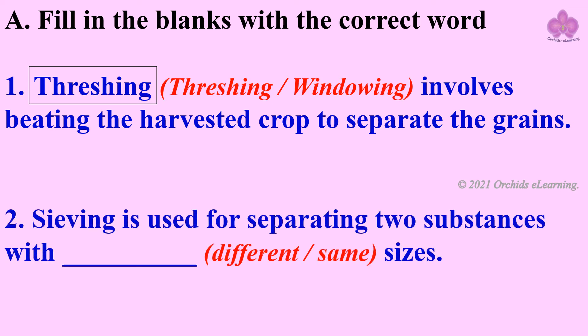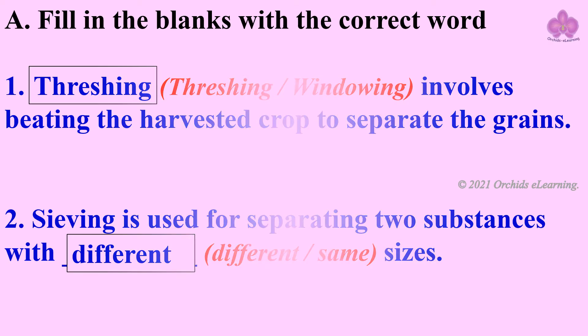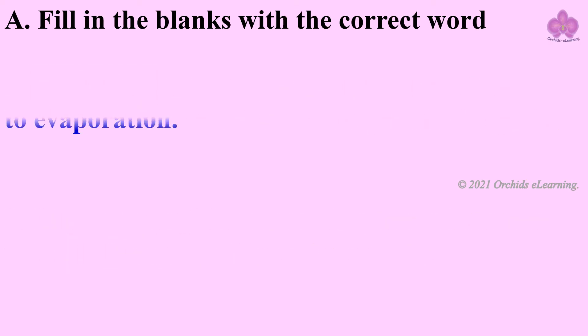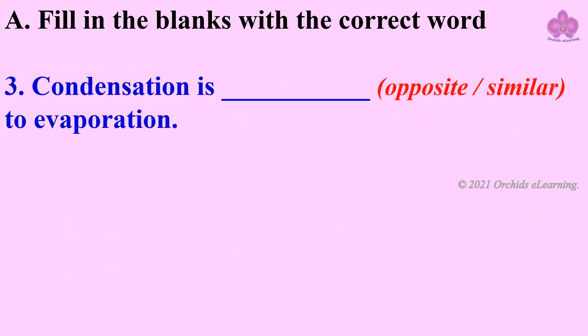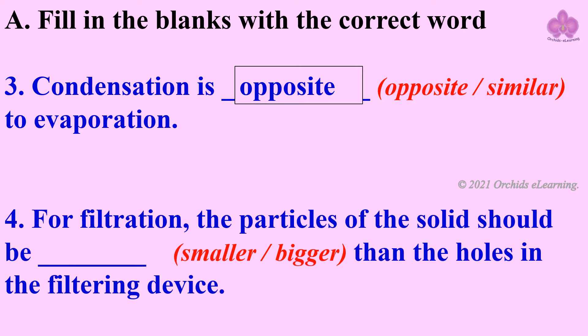Sieving is used for separating two substances with dash sizes. Answer: different. Condensation is dash to evaporation. Answer: opposite. For filtration, the particles of the solid should be dash than the holes in the filtering device.